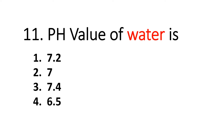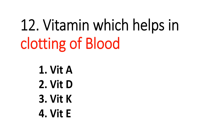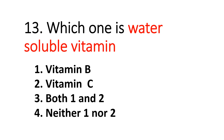Question number ten: Name of the pigment that gives color to the skin. Answer: melanin. Question number eleven: pH value of water is — answer: seven. Question number twelve: Which vitamin helps in clotting of blood? Answer: vitamin K.